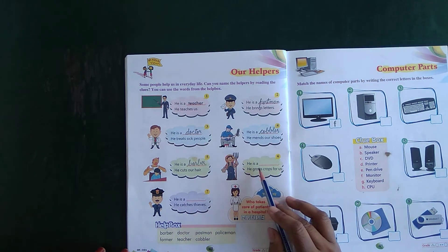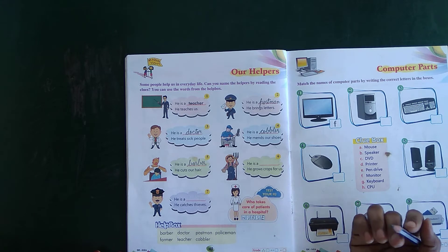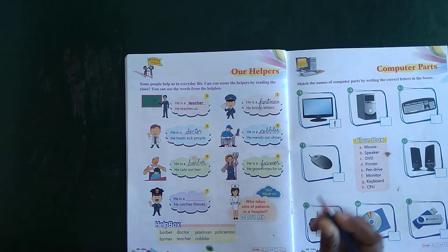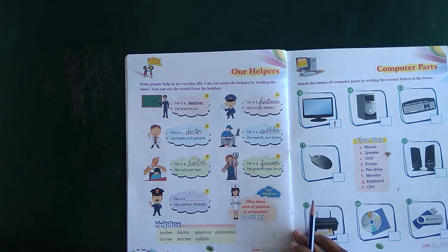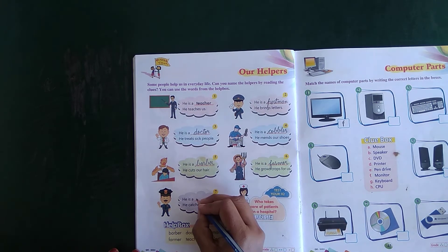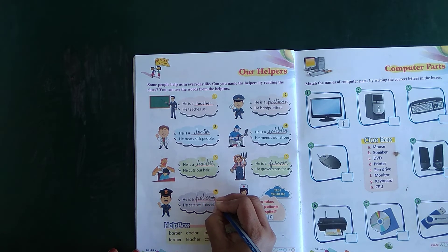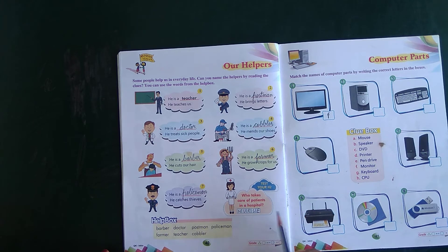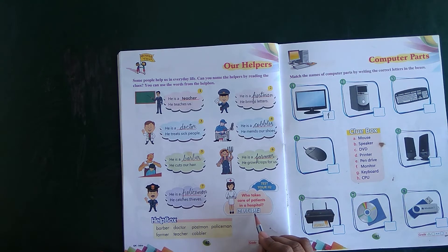Number six. He grows crops for us. He is a farmer. He grows crops for us. Number seven: he catches fish. Number eight: he is a policeman. Who takes care of the patient in a hospital? In the hospital, the patient is cared for by a nurse. He is a nurse.